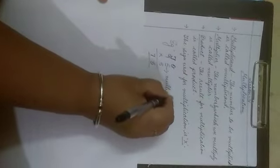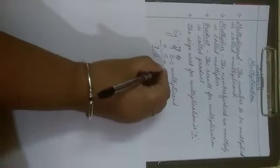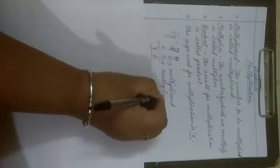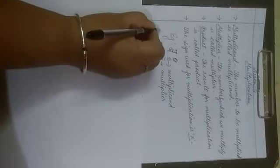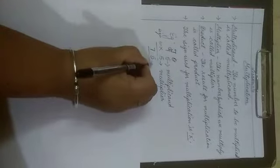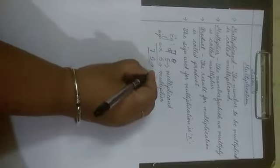In this example, 15 is called the multiplicand — the number which is to be multiplied. The number by which we multiply is called the multiplier. You can see the sign of multiplication. The answer which we got, 75, is called the product.